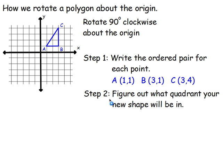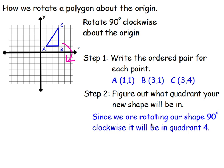Step two is we're going to figure out what quadrant we're going to be in. So if I'm going 90 degrees clockwise — remember, clockwise is to the right — so these points are going to move into that quadrant. Since we're rotating our shape 90 degrees clockwise, we'll end up in quadrant four. Remember, quadrants go one, two, three, four. So 90 degrees clockwise will put me in quadrant four.